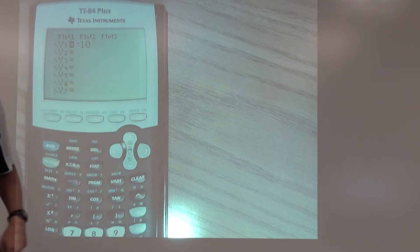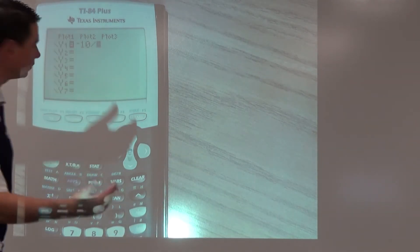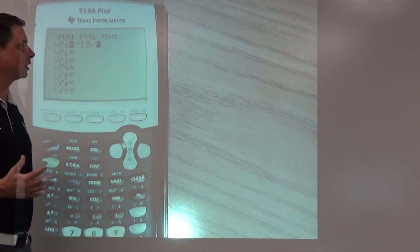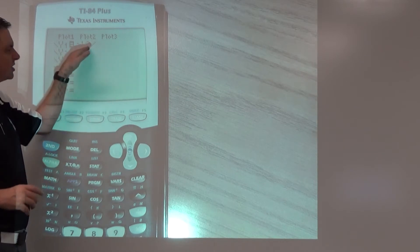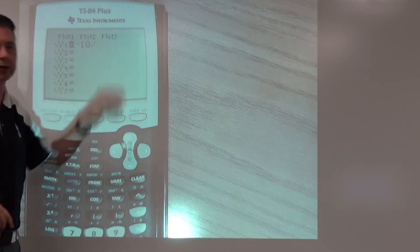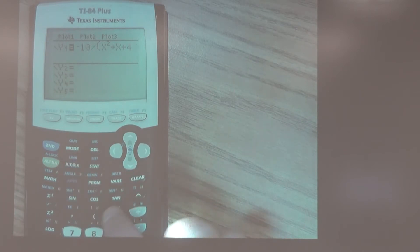So now divided by—now I have an older version, you might have a newer version calculator. If yours just does the fraction bar you're good, put everything you need underneath. Mine just has the slash, so I have to put parentheses here. X squared plus x plus 4, close parentheses.